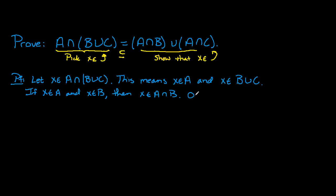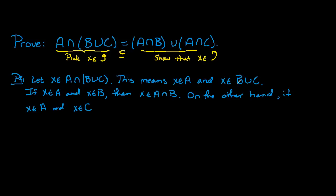On the other hand, recall X is an element of the union, so it's either in B or in C. We've already handled the case where it's in B. Now we look at what happens if X is in C. If X is an element of A and X is an element of C, then X is an element of A intersect C.